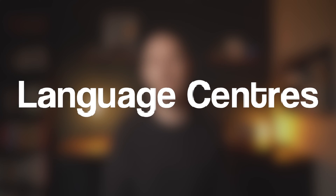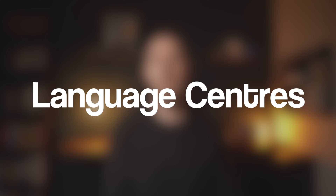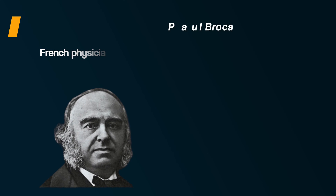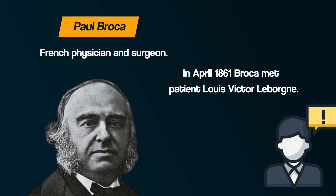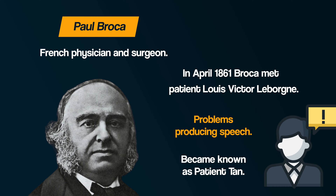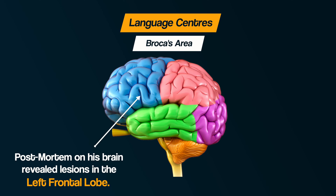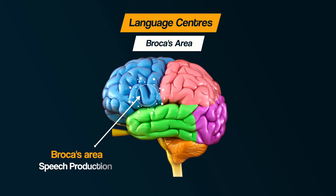Now let's look at the language centres in the brain to help us understand hemispheric lateralisation. In the previous video we talked about Broca and Wernicke's area, including Broca's and Wernicke's aphasia. Aphasia is the term given to someone who has lost the ability to understand or produce speech. Paul Broca studied a patient known as Tan — because regardless of the question he was asked, he always responded 'Tan, Tan.' He clearly had a problem with speech production. When Broca carried out a post-mortem examination, they found lesions in his left frontal lobe, leading to the suggestion that the ability to produce speech is located in this area. This is localisation of function.